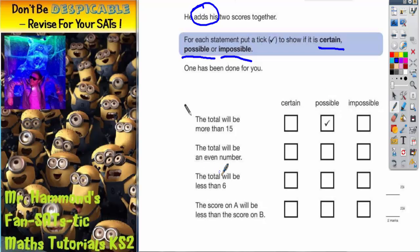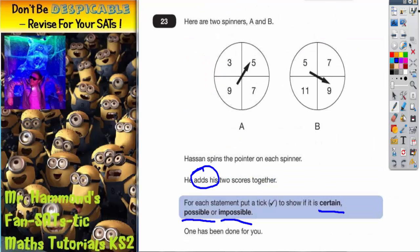The first statement we've got to do is the total will be an even number. Let's have a look at what we've got. All of the numbers on spinner A are odd.